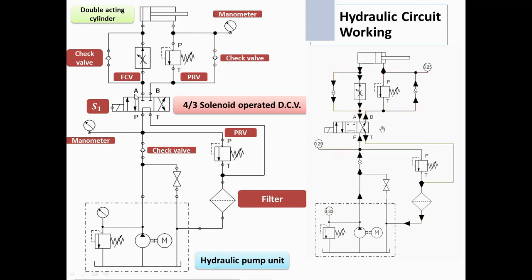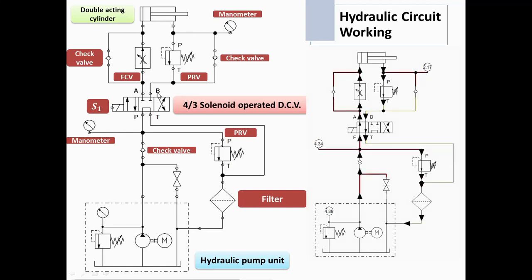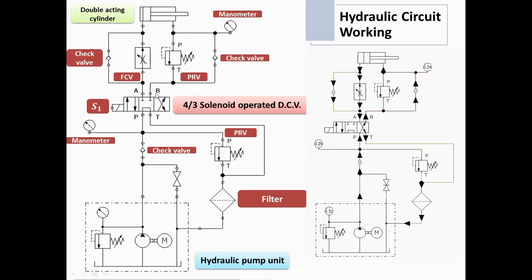This is the check valve which will open only in one direction, so it is a one-direction valve. Then there are four ports: A, B, P, and T. A and B are the cylinder ports — from the cylinder side and from the rod side. P is the pump port and T is the tank or receiver port.